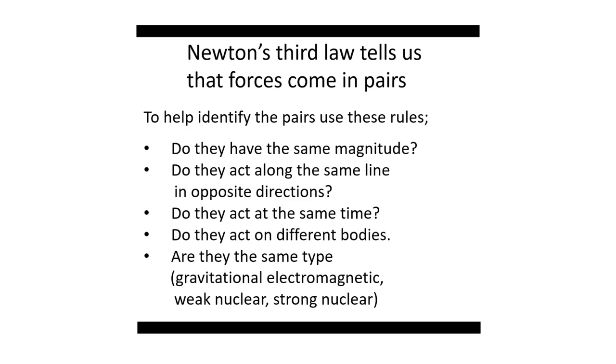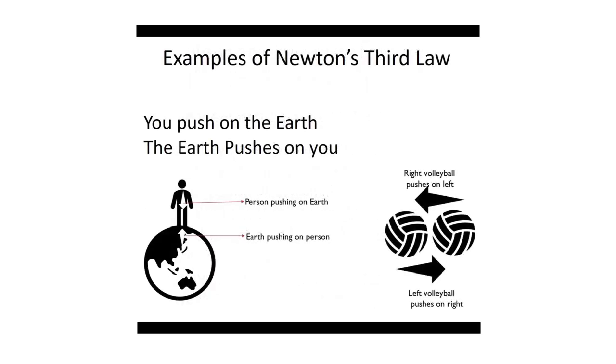Some clarification: the forces do not cancel each other out. This is because they act on different bodies. Newton's third law tells us that forces come in pairs. To help you identify these pairs whenever you're doing a free body diagram, let's go through some litmus tests for the laws. Do they have the same magnitude? Do they act along the same line but in opposite directions? Do they act at the same time? Do they act on different bodies? This is fundamental to Newton's third law pairs. They act on different bodies but along the same line.